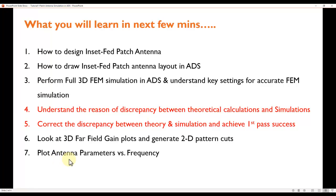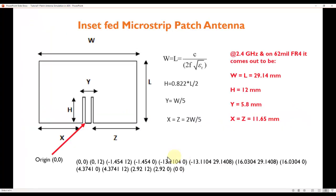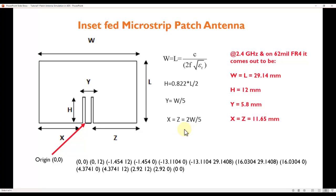After that, we'll look at 3D far-field gain plots, generated 2D pattern cuts, and how to plot antenna parameters versus frequency. Starting with the inset-fed microstrip patch antenna — it's one of the very simple geometries to design. The description shows all key parameters, and I provide equations which I've found to be very accurate compared to other references.